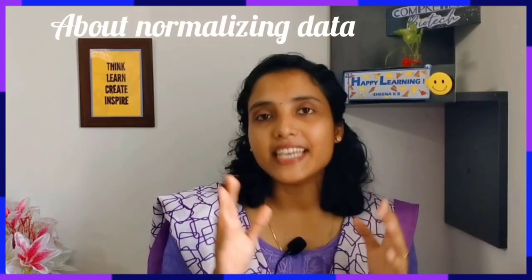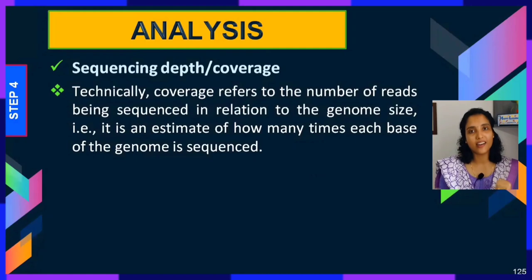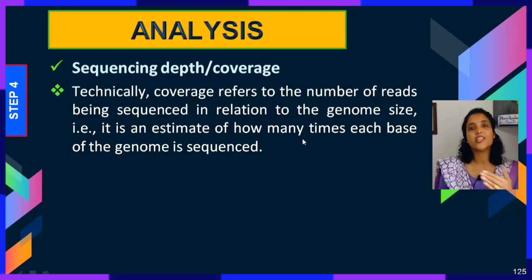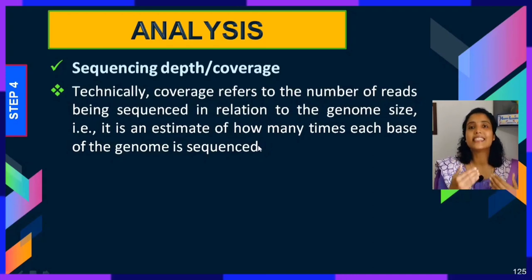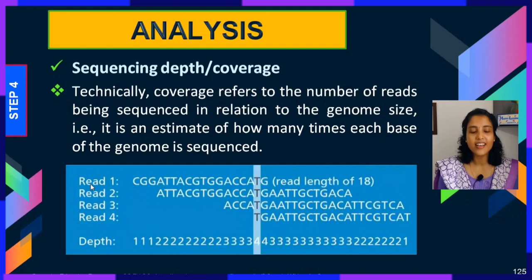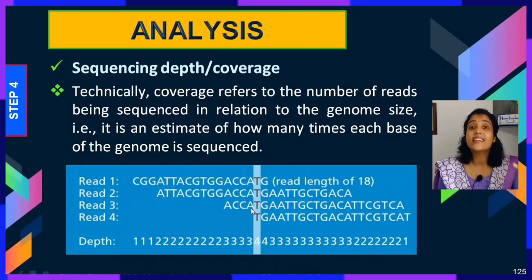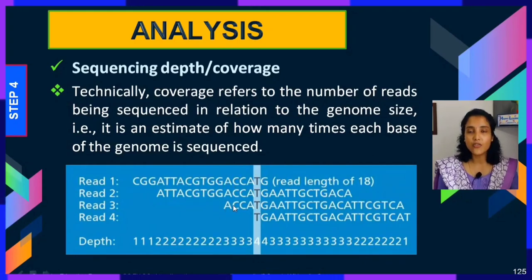Before going further, we need to understand sequencing depth or coverage. Coverage refers to the number of reads sequenced in relation to the genome size — an estimate of how many times each base of the genome is sequenced. In this figure, reads 1 through 4 cover a particular base four times, giving a depth of four at that position. Another base covered by three reads has a depth of three. That is what is meant by coverage.